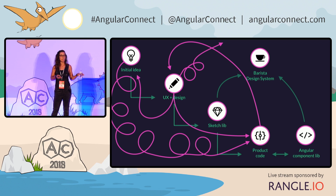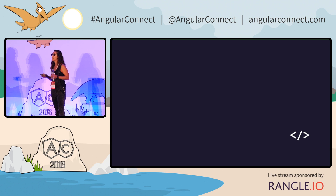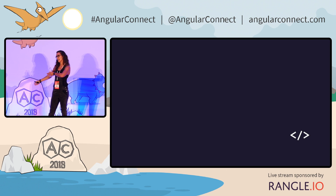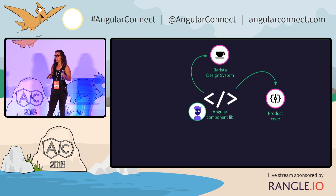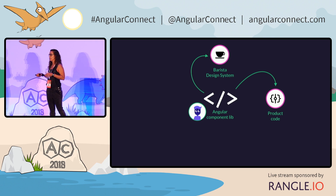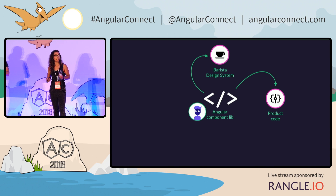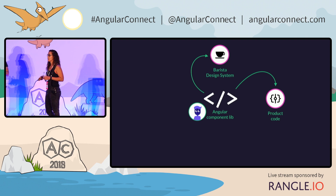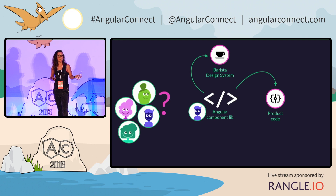So we had this idea of taking the thing at the very end — our Angular components library — and putting it in the center of everything. Now when we change, for example, our button color together with our designers, we can have this change immediately in our design system and also in the product code. That's the basis of our project today: how could we possibly get these code changes automatically to our designs and to our mockups?